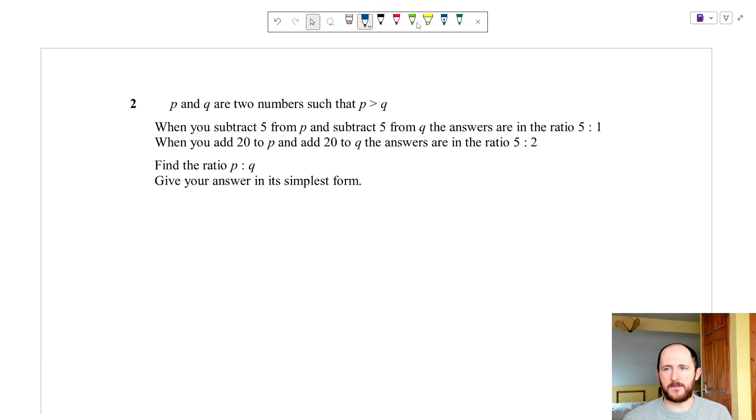So how would I do this? Well the first thing I'll do is highlight the key information so we know p is bigger than q. It says when you subtract 5 from p and subtract 5 from q you have a ratio of 5 to 1. So we could write out that ratio right now. The ratio of p minus 5 to q minus 5 is the same as 5 to 1. That's what they're saying when we subtract 5 from p and subtract 5 from q they're in the ratio of 5 to 1.